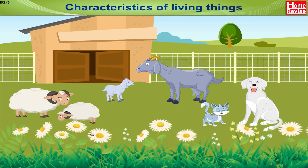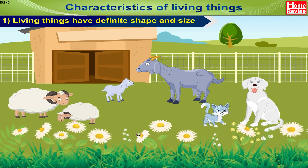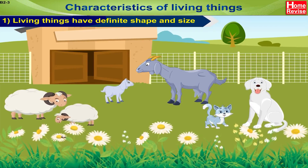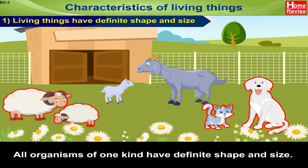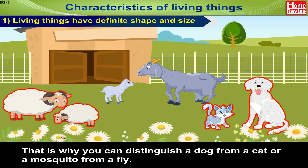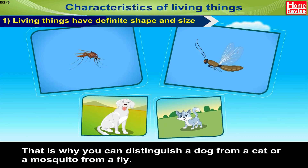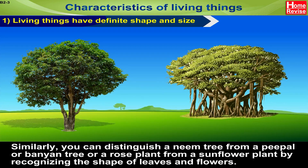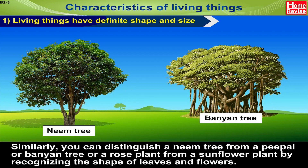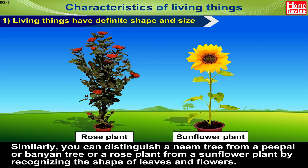Characteristics of living things: Living things have a definite shape and size. That is why you can distinguish a dog from a cat or a mosquito from a fly. Similarly, you can distinguish a neem tree from a peepal or a banyan tree, or a rose plant from a sunflower plant by recognizing the shape of leaves and flowers.